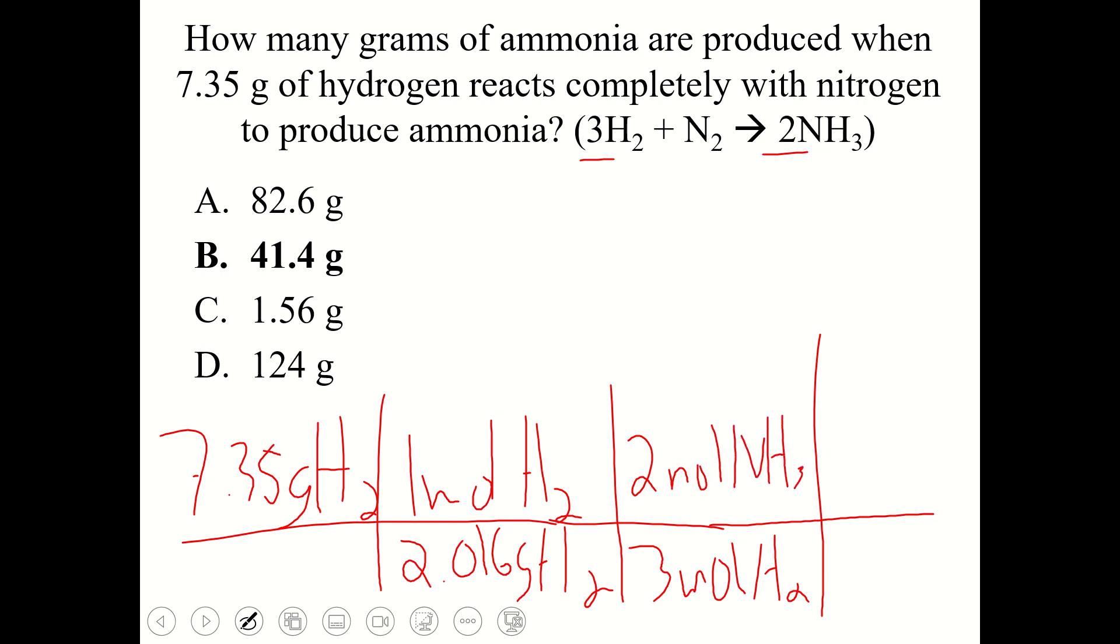And then finally here on the bottom molar mass. So 1 mole NH3. And this would be 17.031 grams NH3. Sorry, I ran out of room a little bit. And there is your, once you chain this all together, you find grams H2 cancels. Moles H2 cancels. Moles NH3 cancels.